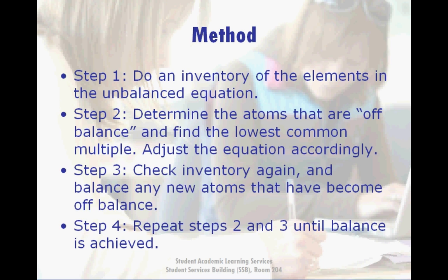Step 3, which should be done every time you add or adjust the coefficients in your equation, is to check your inventory again. Then proceed to balance any other off-balance atoms that already existed or that occurred as a result of your previous adjustment. And step 4 is to repeat steps 2 and 3 as many times as necessary until an overall balance is achieved.